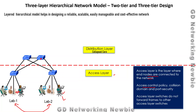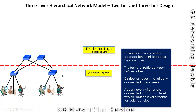We also call this a collapsed core, because we don't have the third layer which we will discuss in a moment. This is specifically the distribution layer. As far as the functions of the distribution layer are concerned, it provides the aggregation point for access layer switching — access layer switches are connected by these distribution layer switches. The distribution layer switches forward traffic between LAN switches, and this layer is not directly connected with the end devices. Distribution layer switches connect to end devices using access layer switches. We can have routers or switches to perform these jobs at the distribution layer.